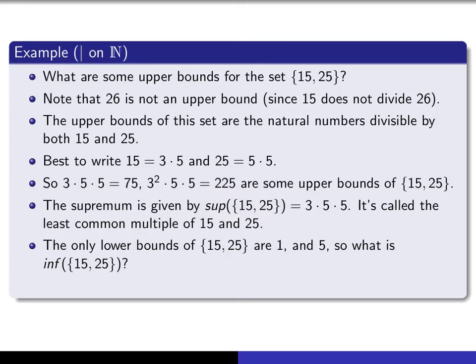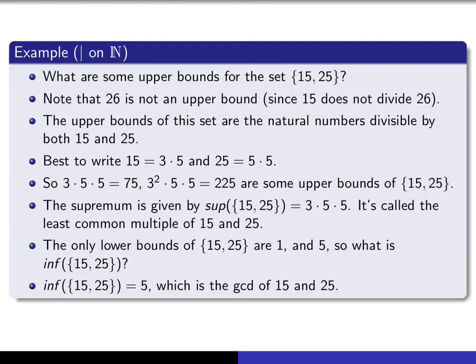What are the lower bounds of {15, 25}? Those are the natural numbers that divide both 15 and 25. Looking at the prime factorizations, a divisor could have a 3 or a 5, but if it had a 3 it wouldn't divide 25 = 5 × 5. The only natural numbers that divide both 3 × 5 and 5 × 5 are 1 and 5. So 1 and 5 are the only lower bounds, and the greatest lower bound — the infimum — is 5. That's also the GCD of 15 and 25. So the GCD is the infimum and the LCM is the supremum of a subset of the natural numbers relative to this divisibility partial order.